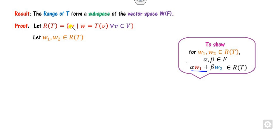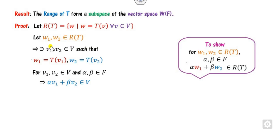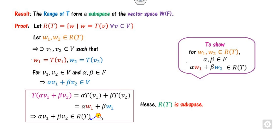If W1 and W2 belong to the range, then there exist V1 and V2 in V such that T(V1) = W1 and T(V2) = W2. Taking scalars alpha and beta, since V1 and V2 belong to V, the closure property holds. So T(alpha·V1 + beta·V2) = alpha·W1 + beta·W2, which also belongs to the range. Hence the range is a subspace.